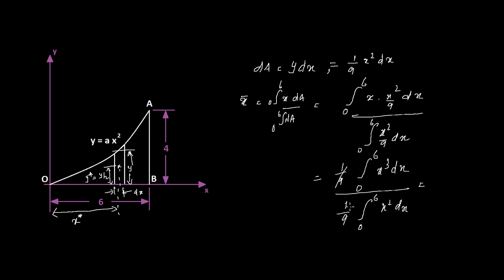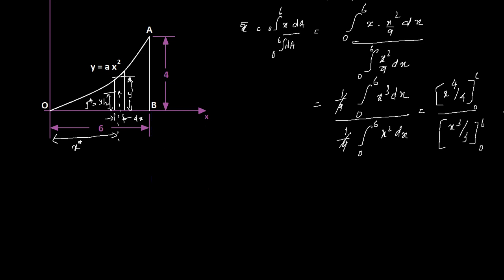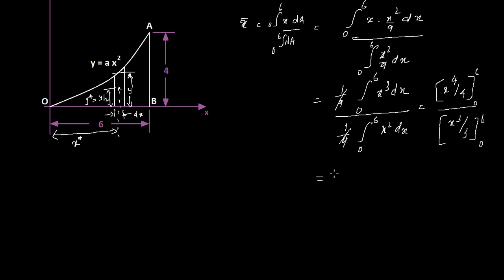Evaluating these integrals gives [X⁴/4] from 0 to 6 over [X³/3] from 0 to 6. After calculation this yields 324 over 72, which equals 9/2 or 4.5. So 4.5 is the X coordinate of the centroid of this area from the origin.